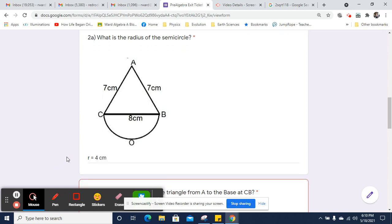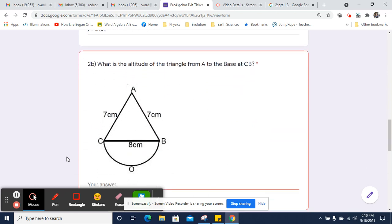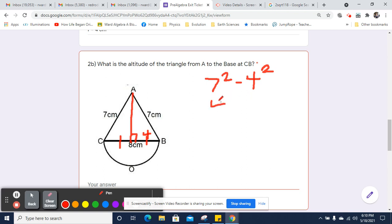And that'll be useful for figuring out the area of that semicircle. Now, what's the altitude of this triangle? Well, the altitude from A to CB, since this is isosceles, is going to split CB into two equal parts. So that's going to be 4, and that's 7. So we're going to have 7 squared minus 4 squared, and that'll equal the altitude squared.